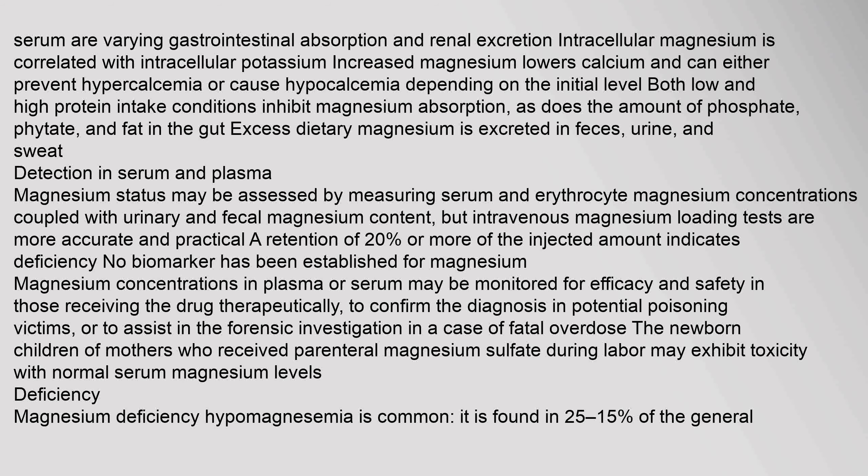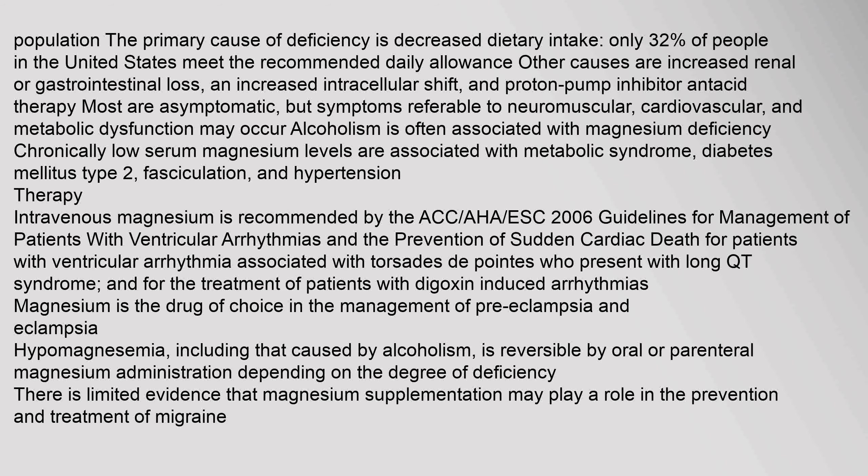Magnesium deficiency (hypomagnesemia) is common; it is found in 2.5–15% of the general population. The primary cause of deficiency is decreased dietary intake — only 32% of people in the United States meet the recommended daily allowance. Other causes include increased renal or gastrointestinal loss, an increased intracellular shift, and proton pump inhibitor therapy. Most are asymptomatic, but symptoms referable to neuromuscular, cardiovascular, and metabolic dysfunction may occur. Alcoholism is often associated with magnesium deficiency. Chronically low serum magnesium levels are associated with metabolic syndrome, type 2 diabetes mellitus, fasciculation, and hypertension.